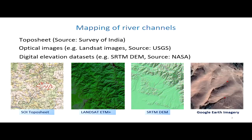Those little red stars are the specific positions of channel heads. We have manually digitized those channel heads on Google Earth imagery, and used those as the ground truth and training data for extracting channel heads from digital elevation models. The data we used is the Shuttle Radar Topography Mission data, which is freely available, at a resolution of one arc second, converting roughly to 30-meter resolution.